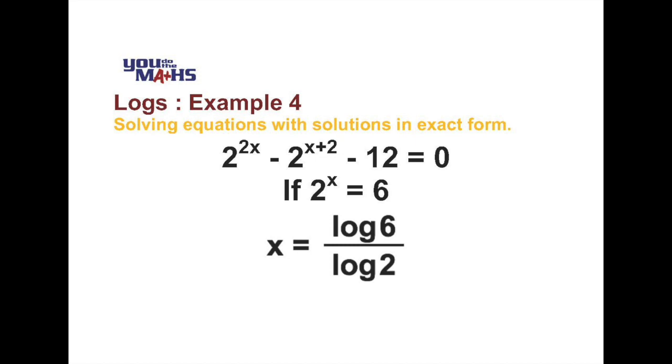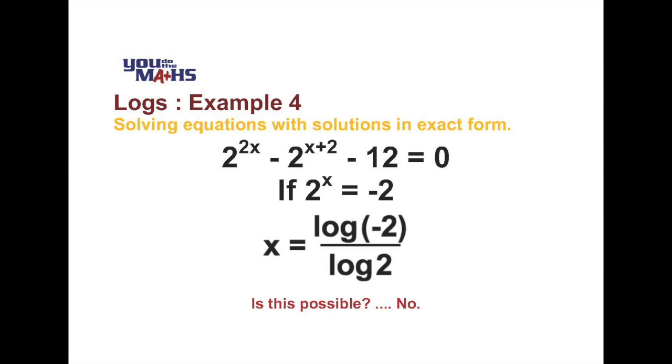Now for the other equation that we're trying to solve, we've got 2 to the x equals negative 2. And if we follow the same process as in the case with 2 to the x equals 6, we get that x equals log of negative 2 over log of 2.